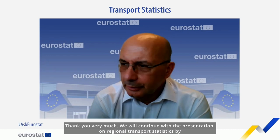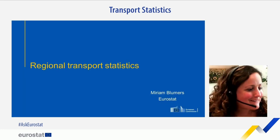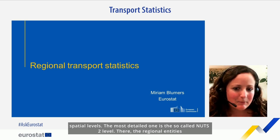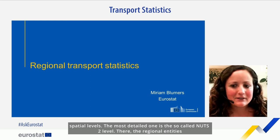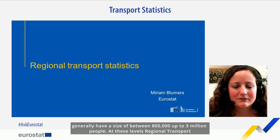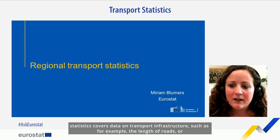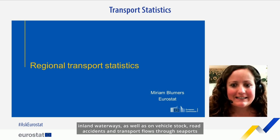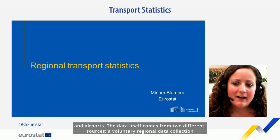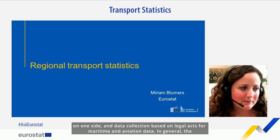We will continue with a presentation on regional transport statistics by Miriam. In regional transport statistics, we compile data at different spatial levels. The most detailed is the NUTS 2 level, where regional entities generally have a size of between 800,000 to up to 3 million people. Regional transport statistics covers data on transport infrastructure such as the length of roads or inland waterways, as well as vehicle stock, road accidents, and transport flows through seaports and airports. The data comes from two different sources: a voluntary regional data collection on one side, and data collection based on legal acts for maritime and aviation data. In general, the data covers EU member states, EFTA countries and candidate countries, depending on availability.